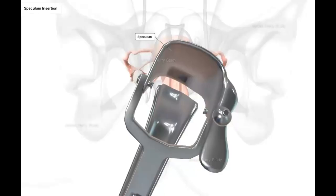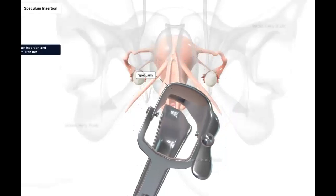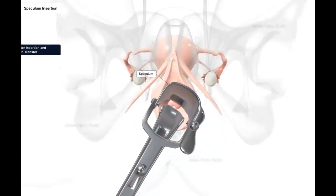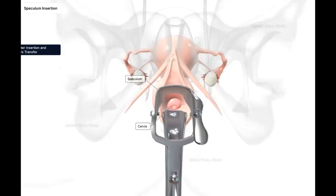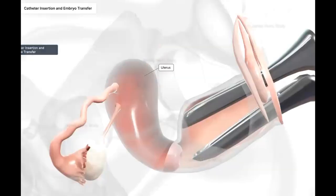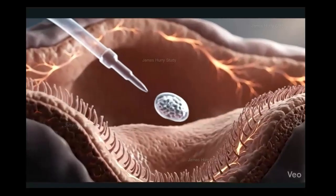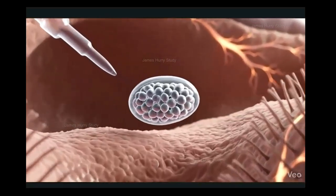During the embryo transfer, a speculum is gently inserted into the vagina to allow the doctor to clearly visualize the cervix. Once the cervix is exposed and properly aligned using modern ultrasound imaging, the physician carefully introduces a thin, flexible precision micro catheter through the cervical opening and guides it into the uterine cavity. The catheter, which is connected to a syringe containing the selected embryo, allows for precise placement within the uterine cavity. The embryo is carefully released into the uterus.